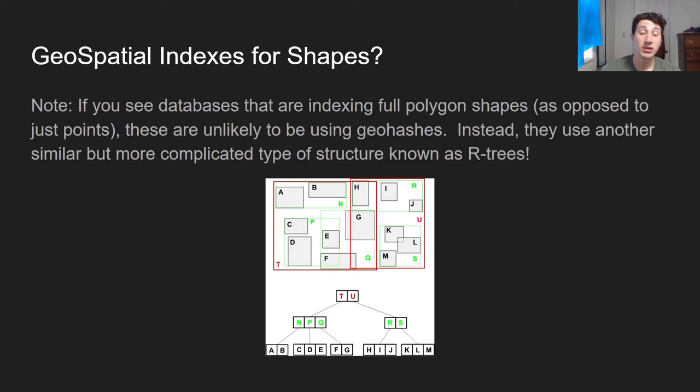What about geospatial indexes in terms of indexing shapes or polygons? Sometimes there are services that want to store a bunch of polygon data and put those on a map. That's how a lot of maps are built out. But actually speaking, they are unlikely to use geohashes. Geohashes are mainly optimized for indexing points and being able to find a bunch of points that are near one another. But if you actually want to store shapes themselves, you're better off using this more complex structure called an R-tree. There are similarities to geohashes, but at the end of the day, in R-trees, you can actually have overlapping boxes, which is not possible in geohashing. Maybe I'll make a video about that in the future. But for now, it's a pretty complex topic.